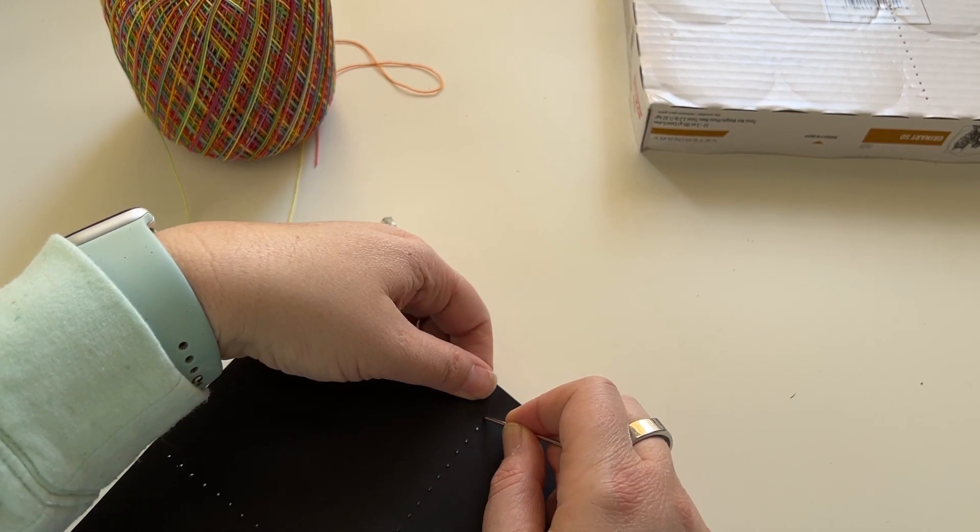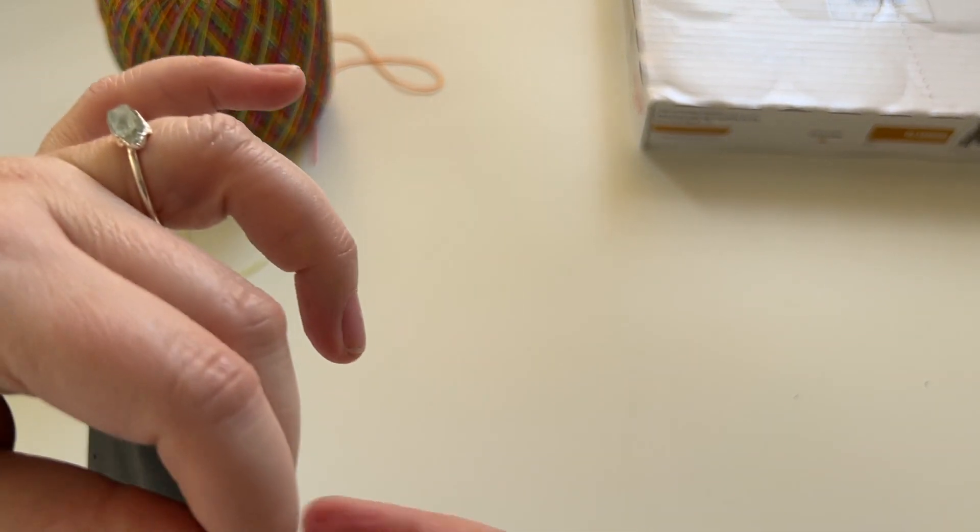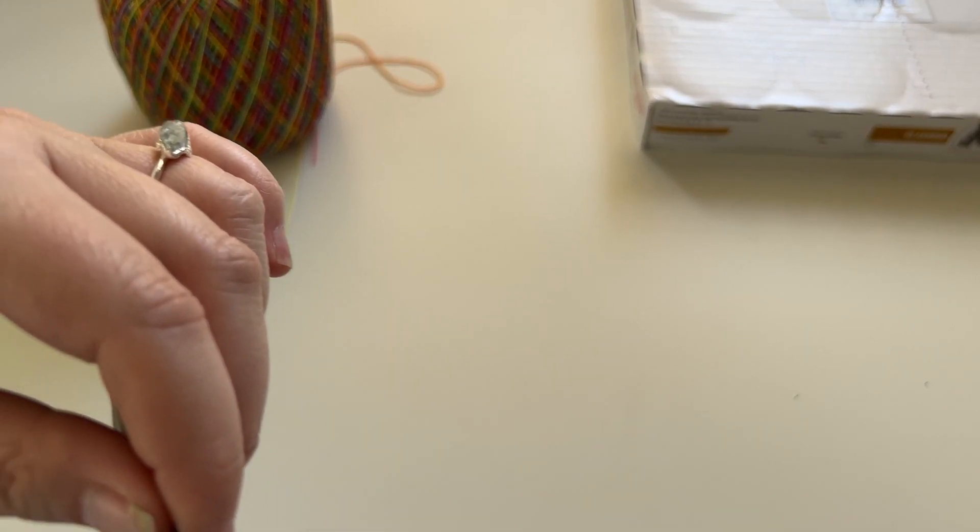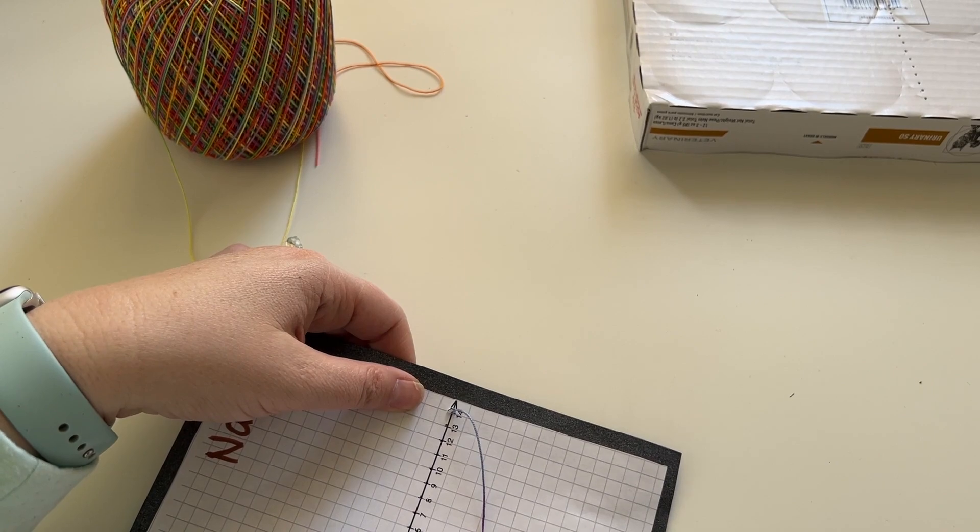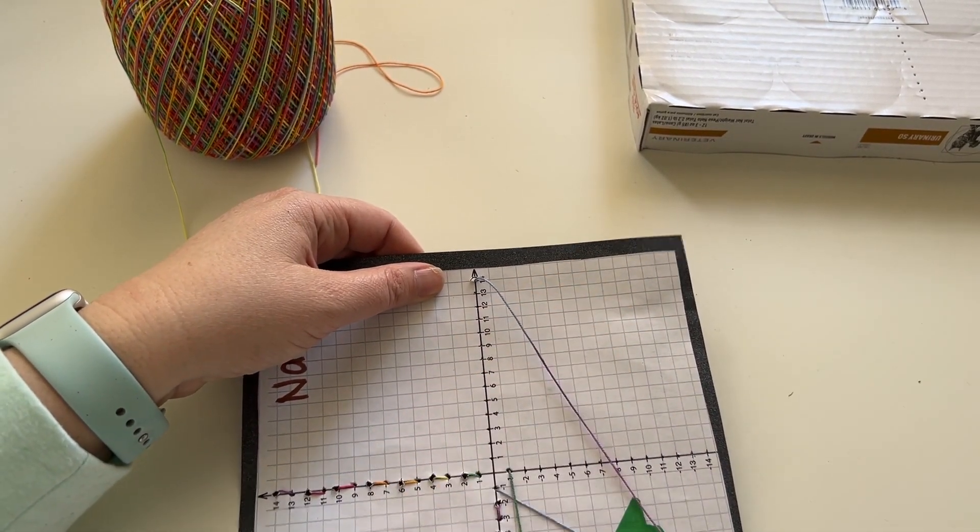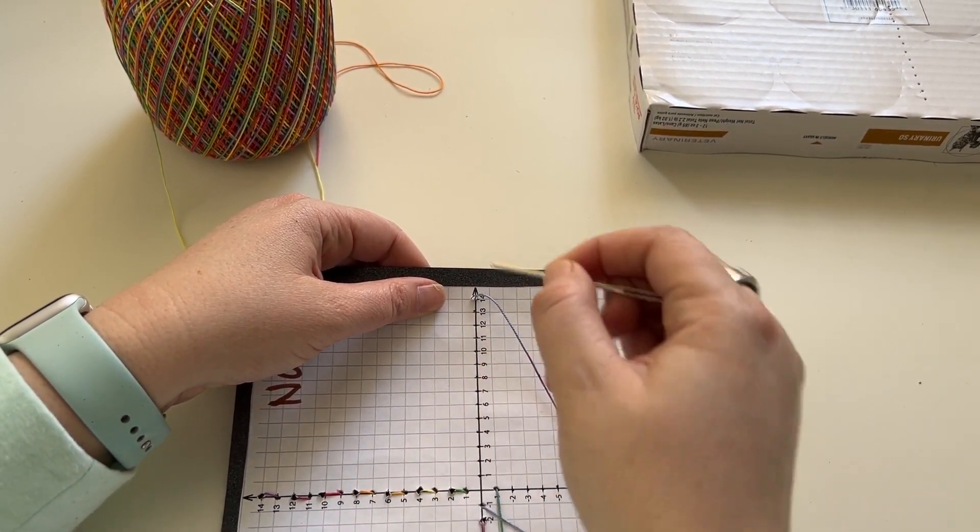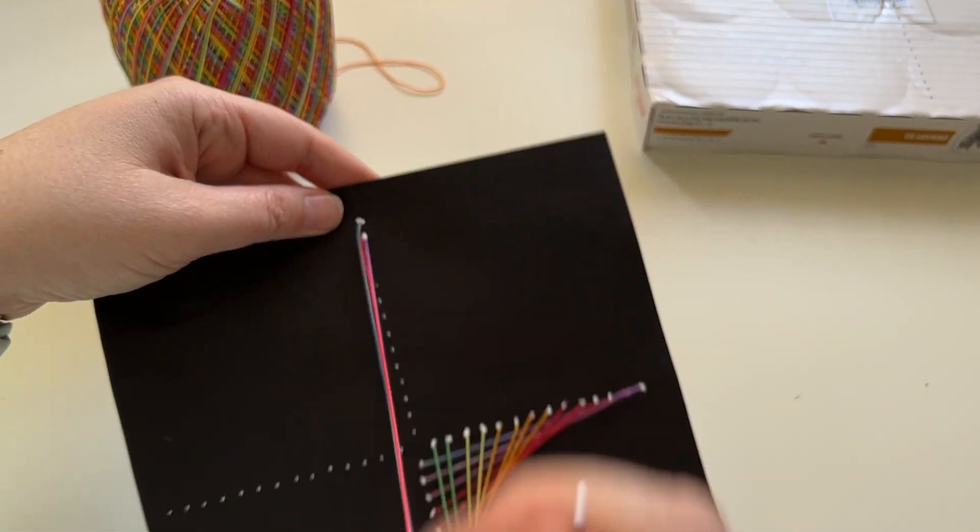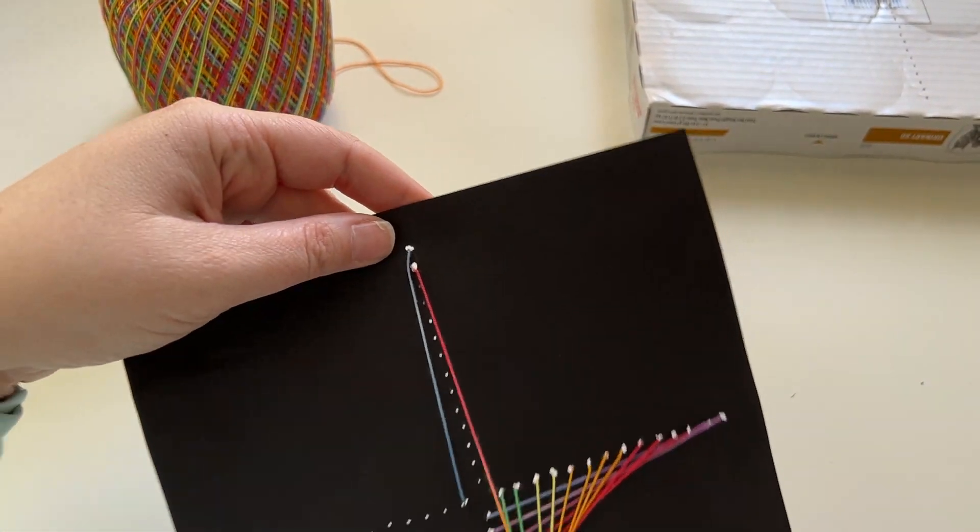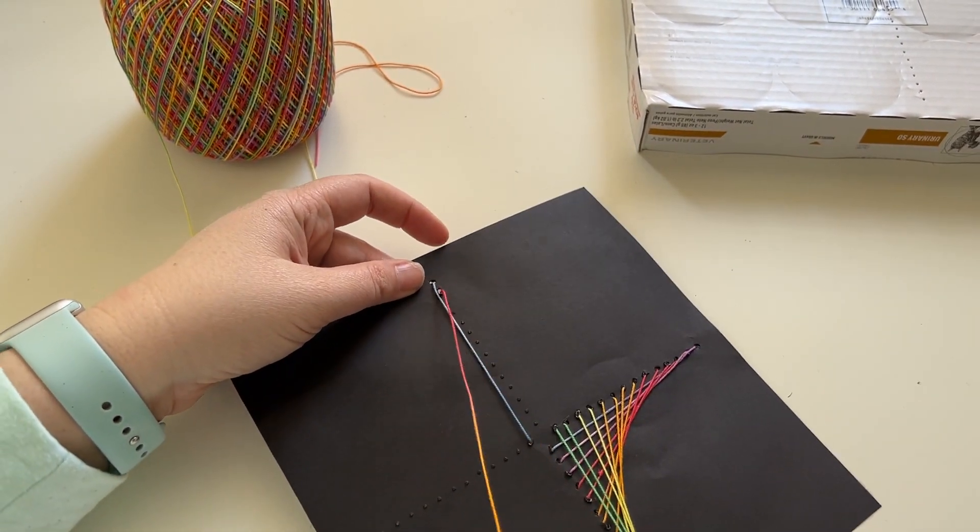It's that same pattern of through the back, through the front, and then making sure that when you're on the back side you're not crossing from the y to the x. That's only in the front. So I'm going to go down to this 13 and then you keep going.